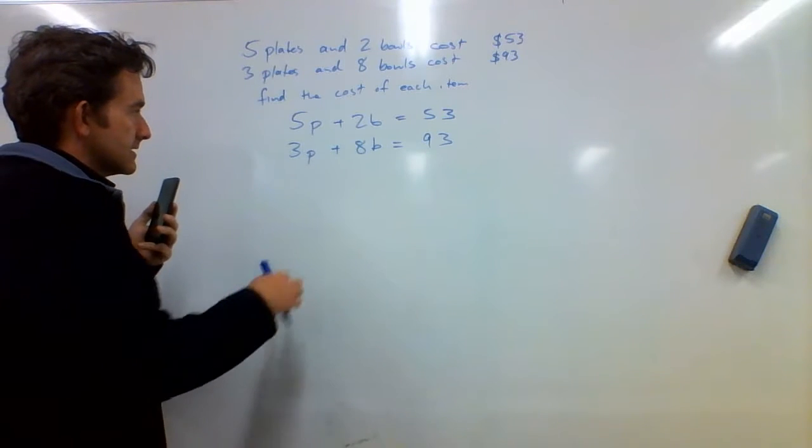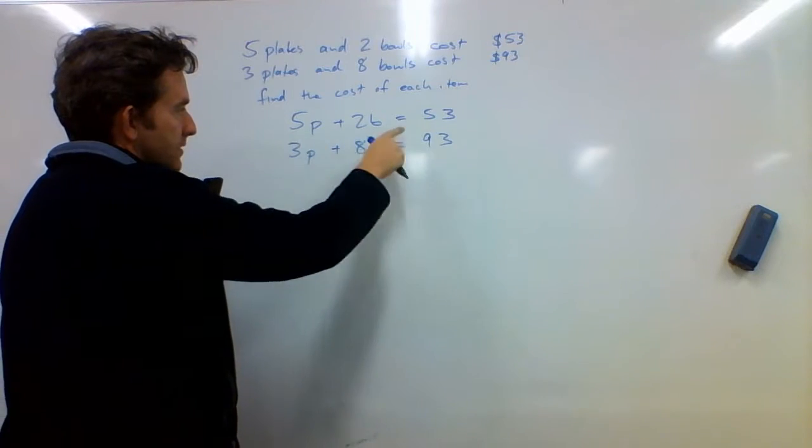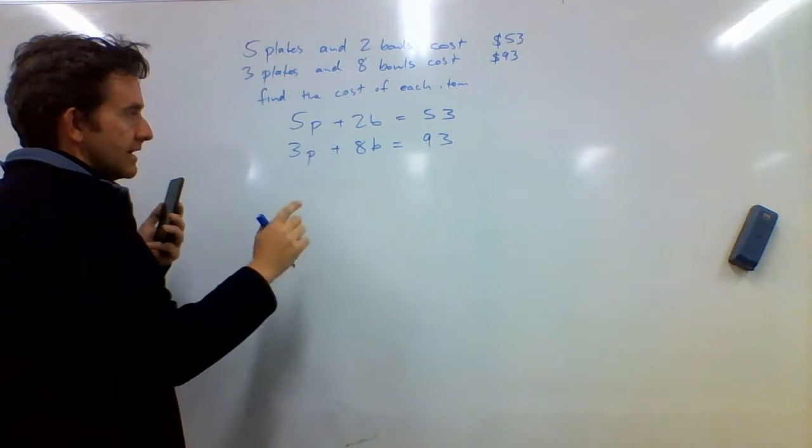And I can see that, for example, 2b would go into that 4 times. So if I multiply this by 4, I think we'll be on the right track.